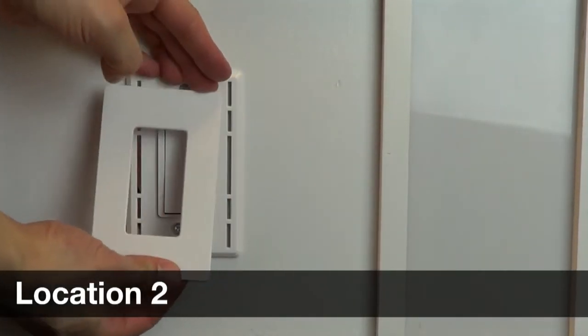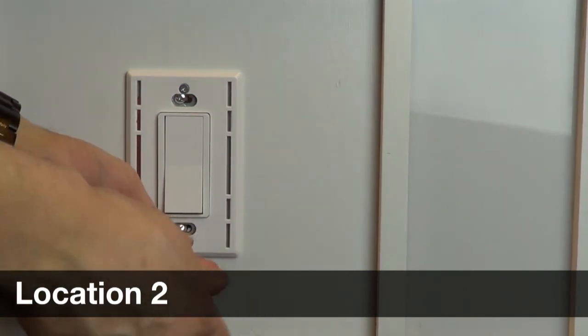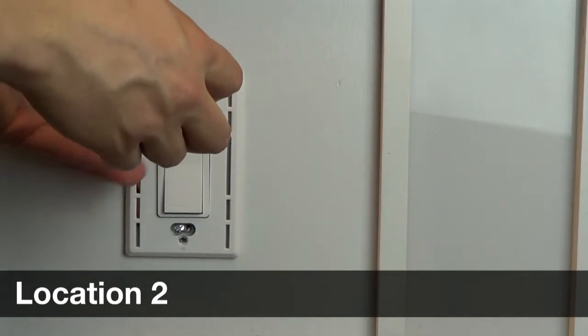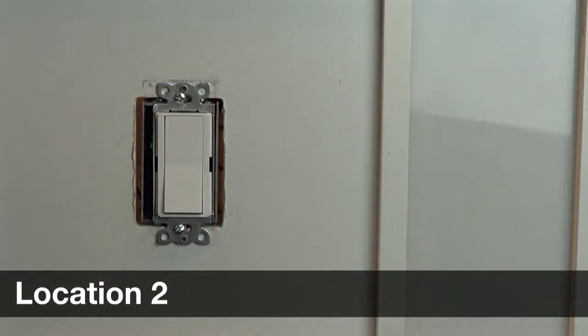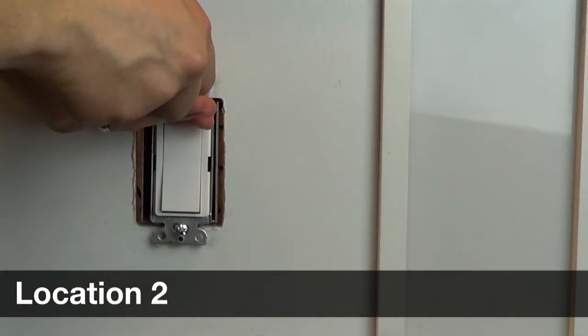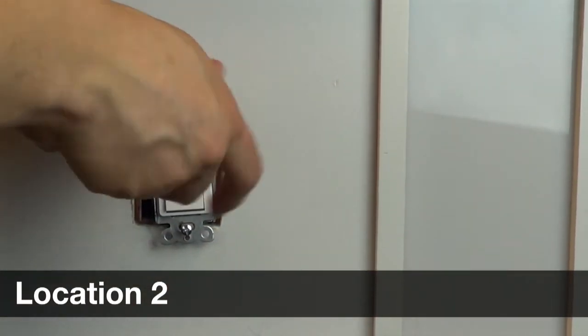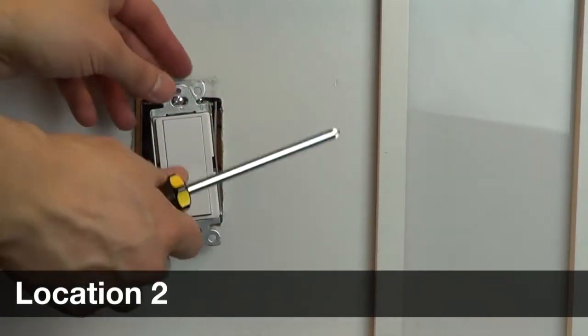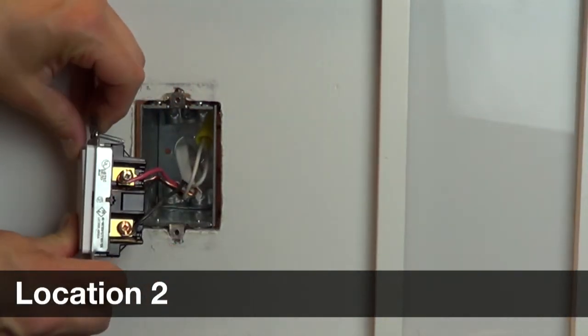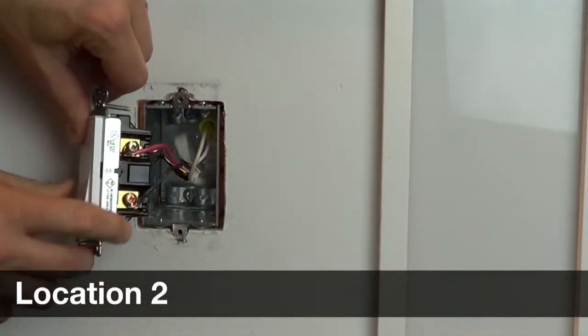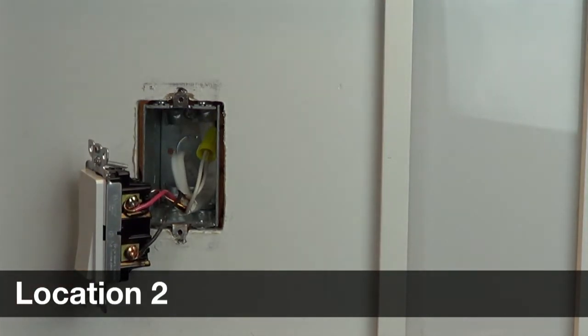Before turning the power back on, remove the next switch from the wall. Use a piece of electrical tape to tag the wire connected to the different colored screw, similar to the first location.